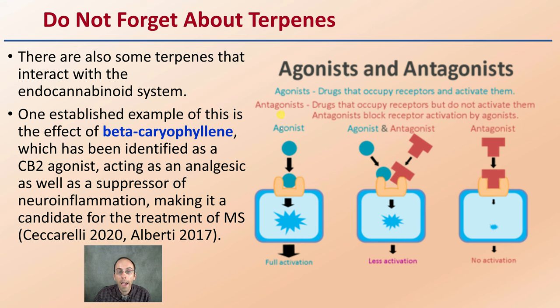An agonist is going to allow for the binding and activation of that molecule, while an antagonist is going to either lessen that activation or block it entirely.